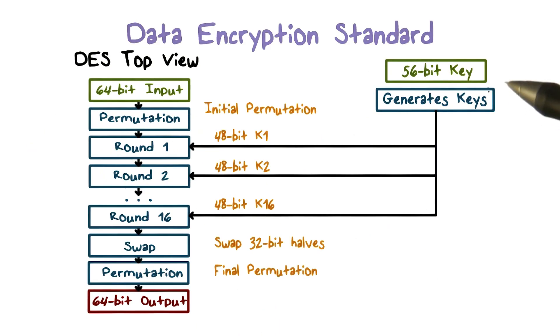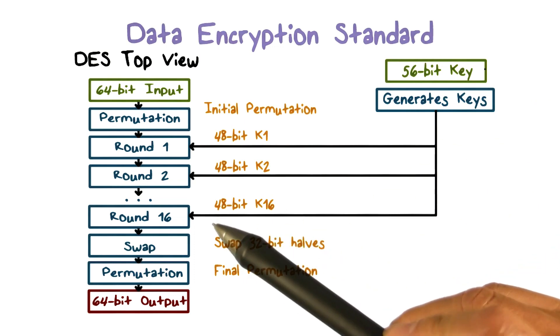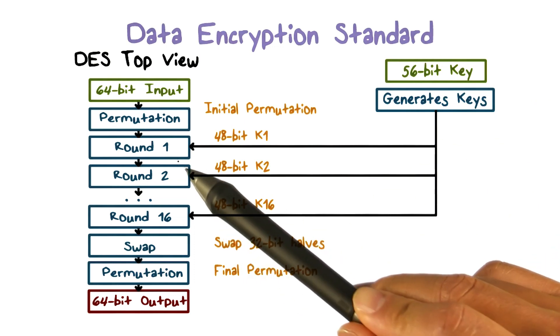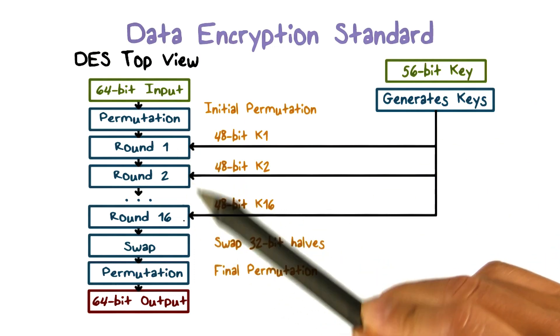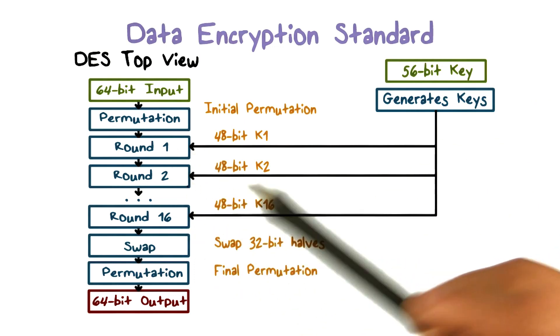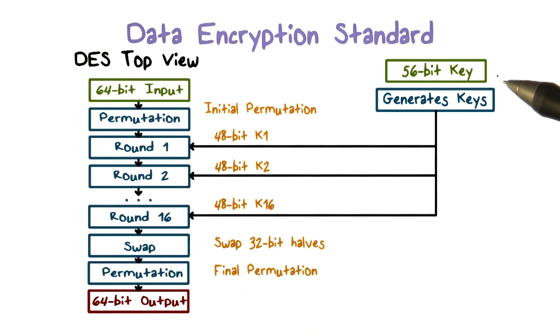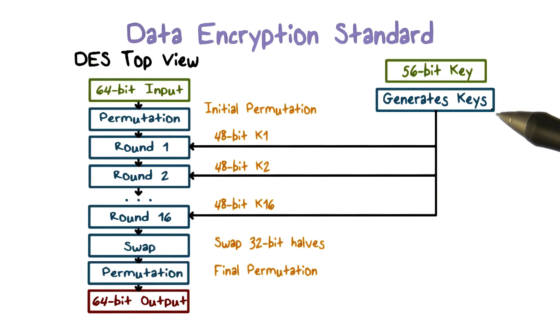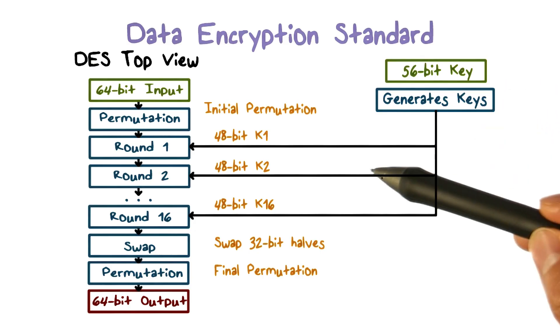Here's a high-level view of DES. There are 16 rounds of operations. From the original 56-bit key, 16 subkeys are generated, one for each round.